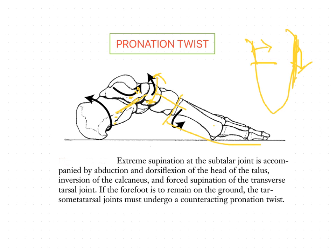The lateral side which is in contact with the ground does not provide enough contact surface to maintain the stability of the body. The superimposed forces coming through the talar joint are carried to the lateral surface, which is insufficient to maintain stability. Therefore, a compensatory movement must take place at the tarsometatarsal joint, because the transverse tarsal joint is unable to compensate these forces.